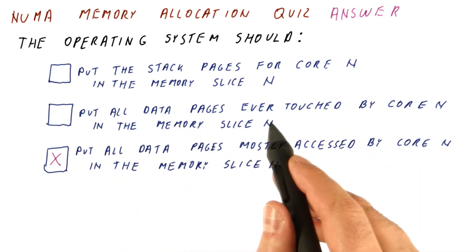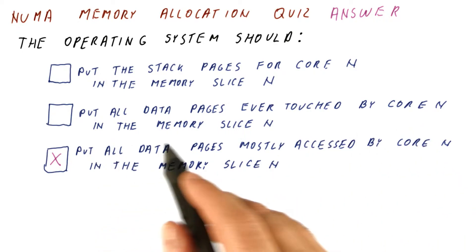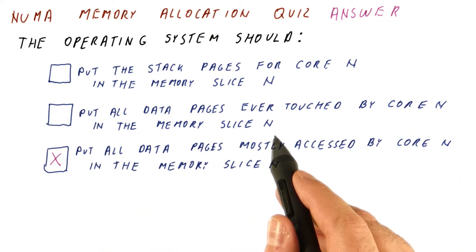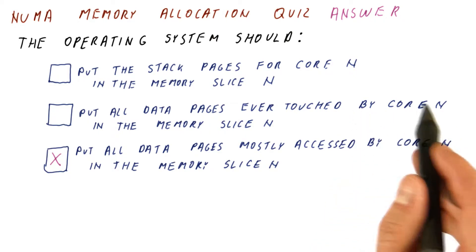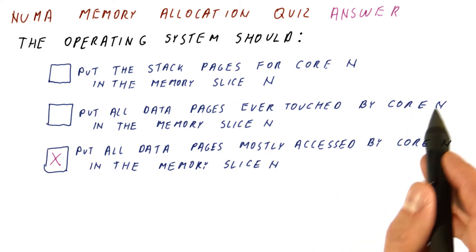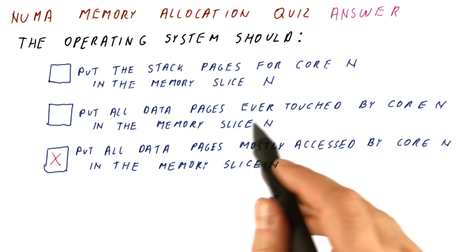If we, however, put all data pages ever touched by core N in the memory slice N, then we have a problem because, for example, one core might initialize all the data, and then we put all of the data in its memory slice.